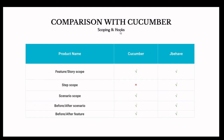For scoping and hooks: feature and story scope are supported in both — in JBehave it's called story scope, while in Cucumber it's called feature scope. Step scope is not available in Cucumber as it's considered an anti-pattern, but it is available in JBehave. Scenario scope is available in both. Before and After scenario hooks can be used in both Cucumber and JBehave. Before and After feature/story hooks are also supported in JBehave, same as Cucumber. Overall, JBehave is very much a BDD framework like Cucumber.